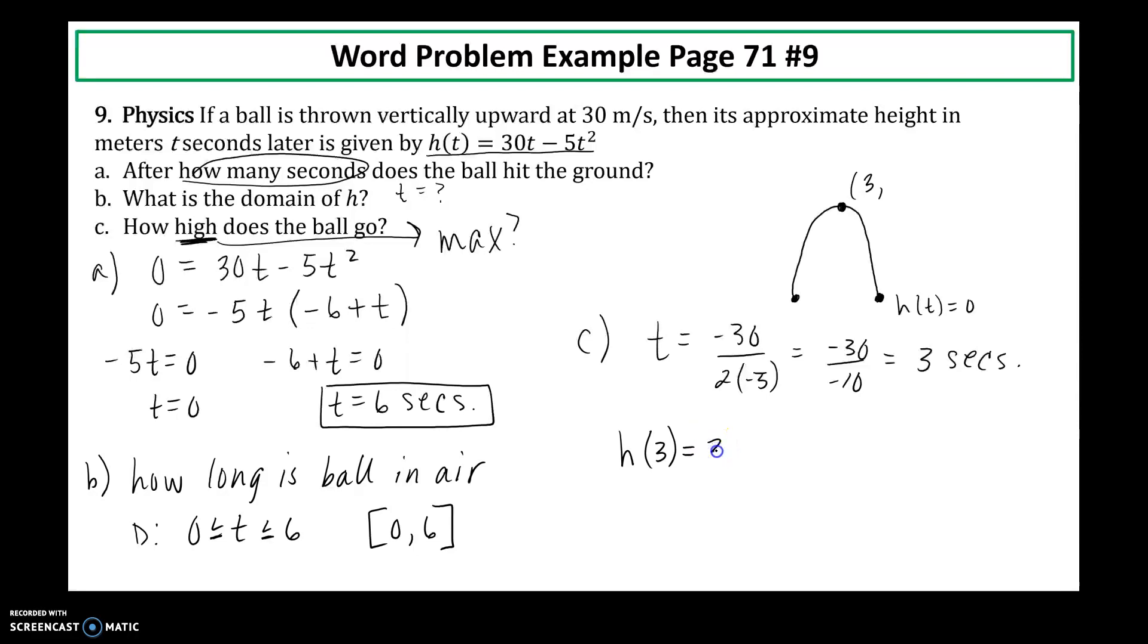Plug that back into your function. 30 times 3, 5 times 3 squared. So I get 90 minus 5 times 9 gives me 45. And what's this? This is measured in meters. So the final answer to part c would be 45 meters.